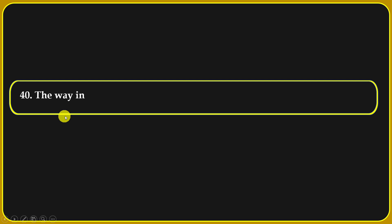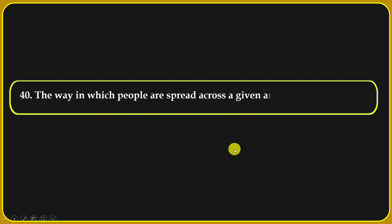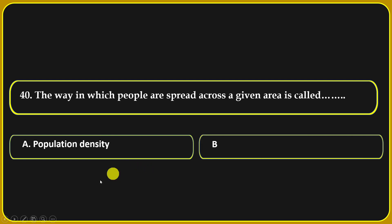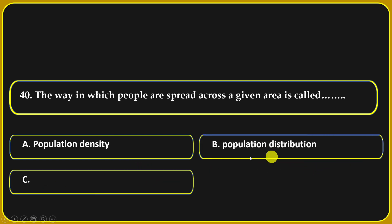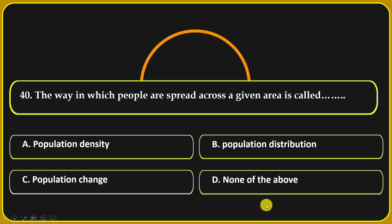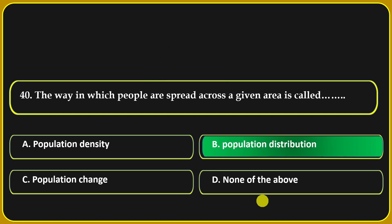The way in which people are spread across a given area is called: population density, population distribution, population change, or none of the above. Population distribution is the correct answer.